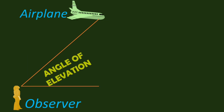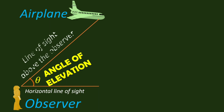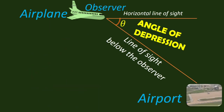The angle of elevation is the angle from the horizontal to the line of sight of the observer to the object above. The angle of depression is the angle from the horizontal to the line of sight of the observer to the object below.